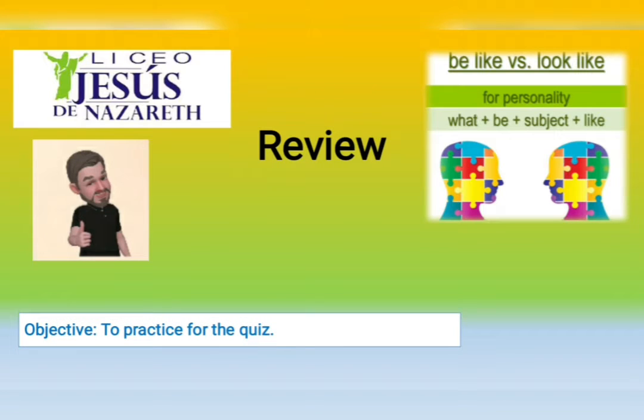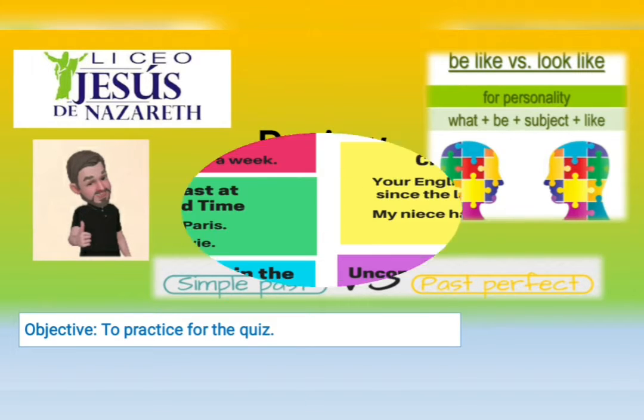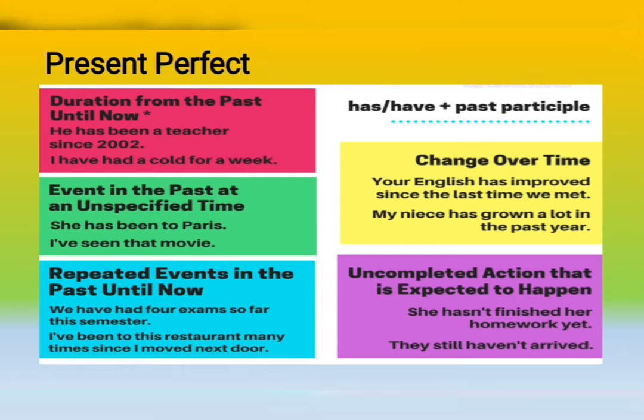People from Second Humanities, today we are going to have the review. We have some of these topics: be like versus look like, or personality. The objective is to practice for the quiz. Simple past versus past perfect also.